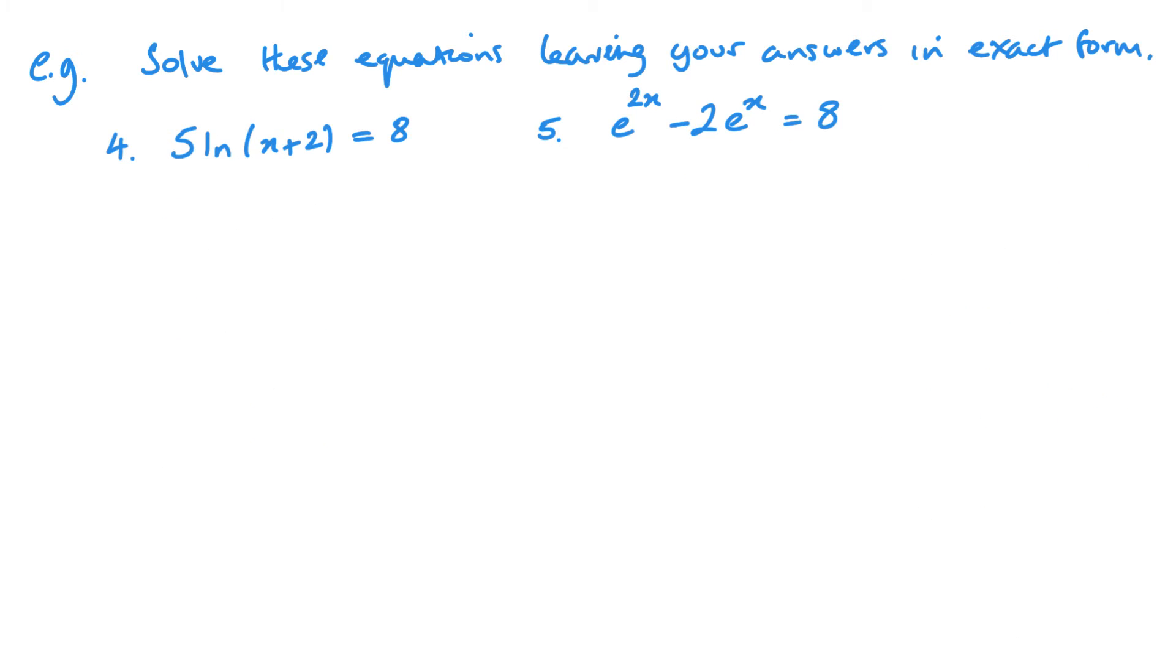So for this one, I want to first get rid of my 5. So dividing by 5, I get ln x plus 2 equals 8 over 5. Then I get x plus 2 equals e to the 8 fifths. So x plus 2 equals e to the 8 over 5. So x equals e to the 8 over 5 minus 2.